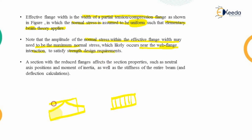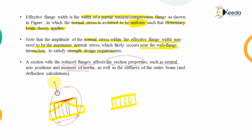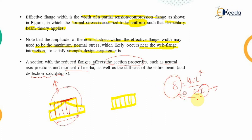A section with a reduced flange affects the section properties. Since we are now considering the flange to be reduced, it will affect the neutral axis position, moment of inertia, and the stiffness of the section. This in turn affects the deflection calculation, since the deflection formula — typically kWL⁴/EI — depends on I. Because I is varying, the deflection delta will also vary.